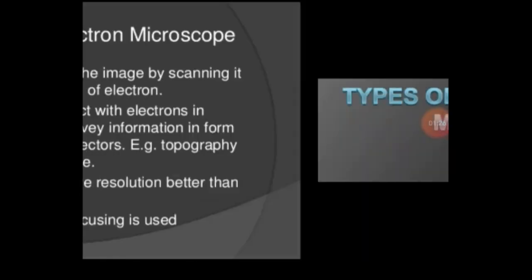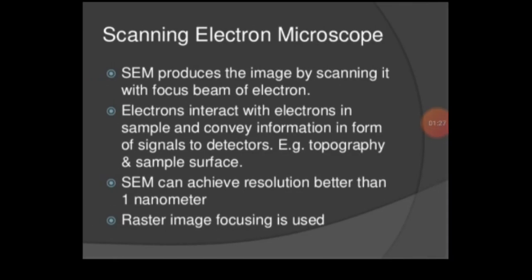Types of electron microscope. Scanning electron microscope produces the image by scanning it with a focused beam of electrons. Electrons interact with electrons in the sample and convey information in the form of signals to detectors.